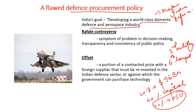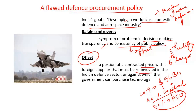Aspiring on this goal, the government introduced the offset clause while purchasing the Rafale fighter aircraft from France. The Rafale controversy symptomizes the problem in decision-making transparency and consistency of public policy. The offset policy is a portion of a contracted price with a foreign supplier that must be reinvested in the Indian defense sector or against which the government can purchase technology.